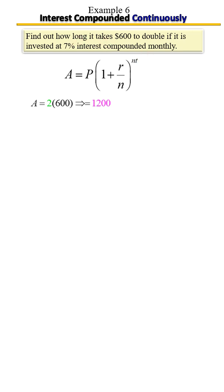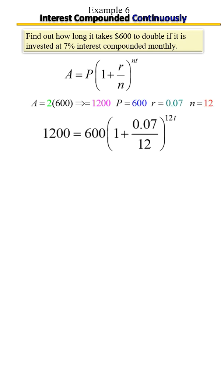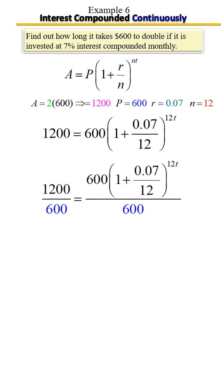We're solving for T, so let's plug in everything we know to find out what we don't know. We need to peel away the layers to get to T. Step one: remove the 600 by dividing by 600 on both sides — whatever you do to one side, you do to the other.